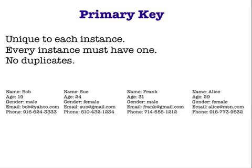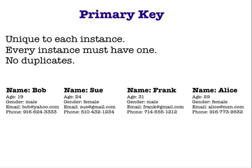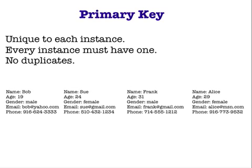Such an attribute is called a primary key. The primary key attribute must be unique to every person, every person must have one, and it cannot be shared amongst more than one person. Which of these attributes would make a good primary key? How about the person's name? After all, every person has a name, but we might end up storing information about more than one Bob or Alice. Since duplicates are not allowed, we shouldn't use the name as the primary key. Can we use an email address or phone number? Well, some people don't have an email address or their own phone number. Some people have more than one, and others share an email address or phone number among several people. So neither an email address nor a phone number make very good primary keys.